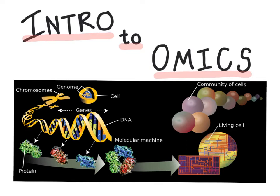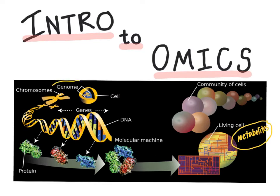Looking at the diagram on the page, what we are seeing is essentially the central dogma of biology in action: the genome, the genes of the cell, get transcribed and translated into protein. Taking that central dogma a step further, those proteins catalyze chemical reactions — some of which yield the variety of metabolites that are found within a cell.